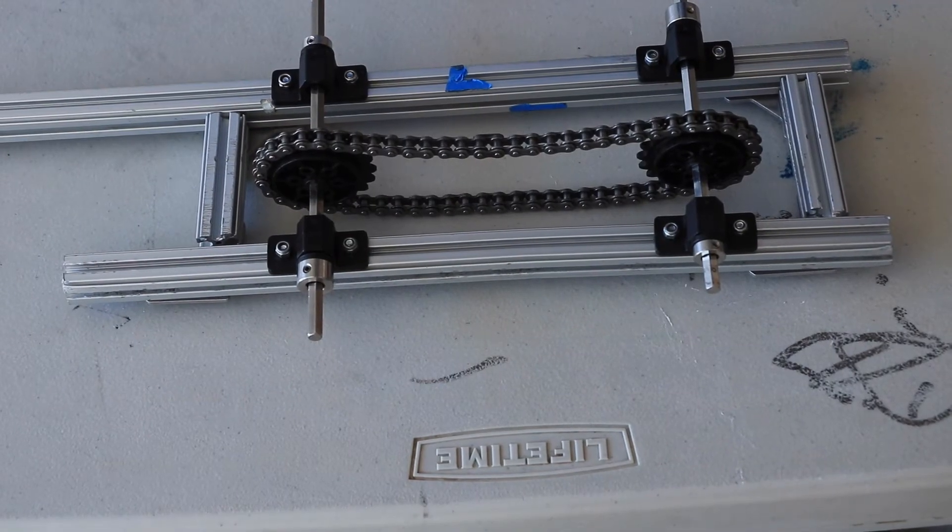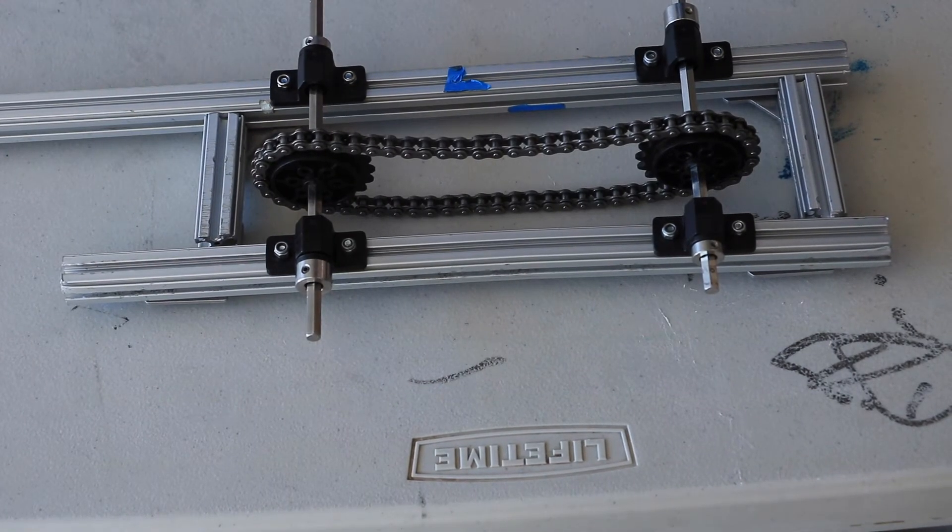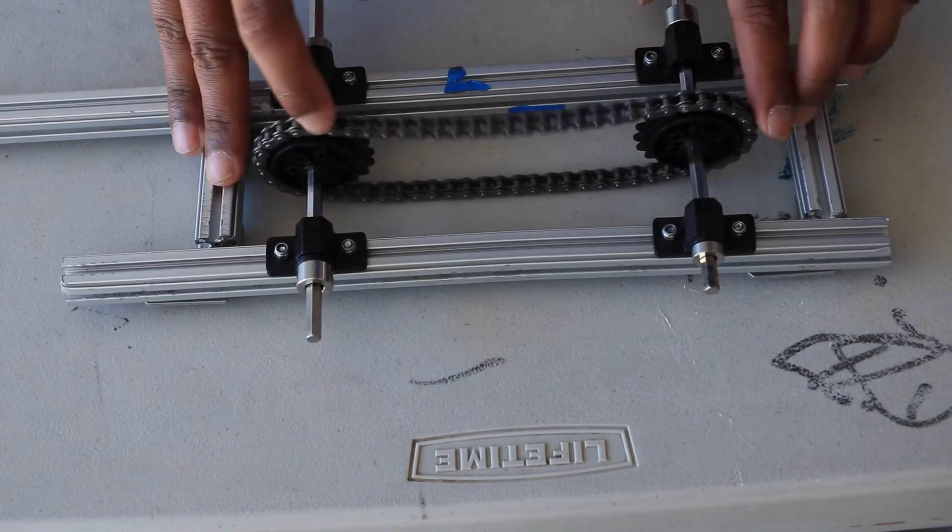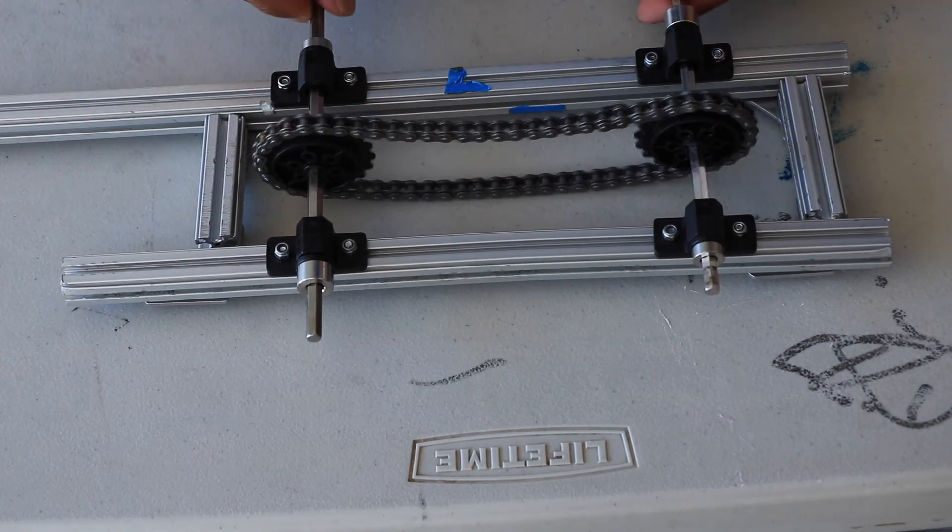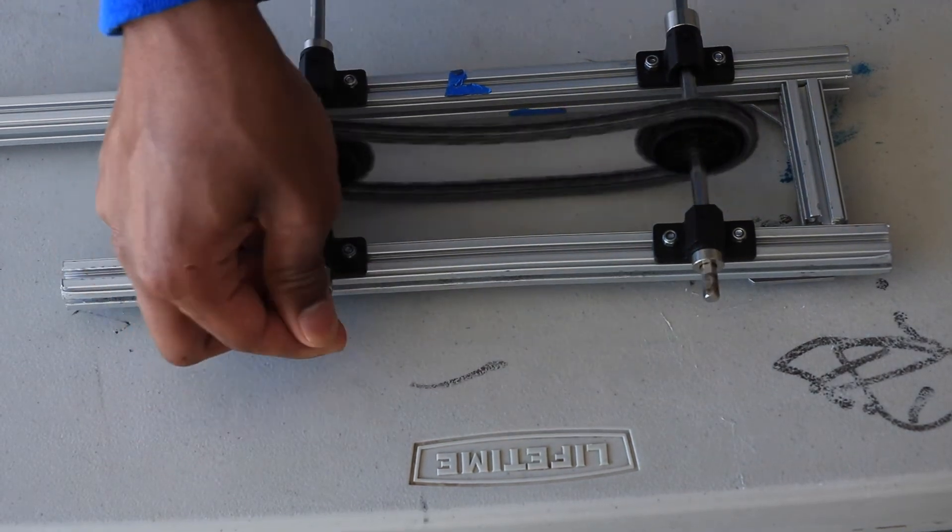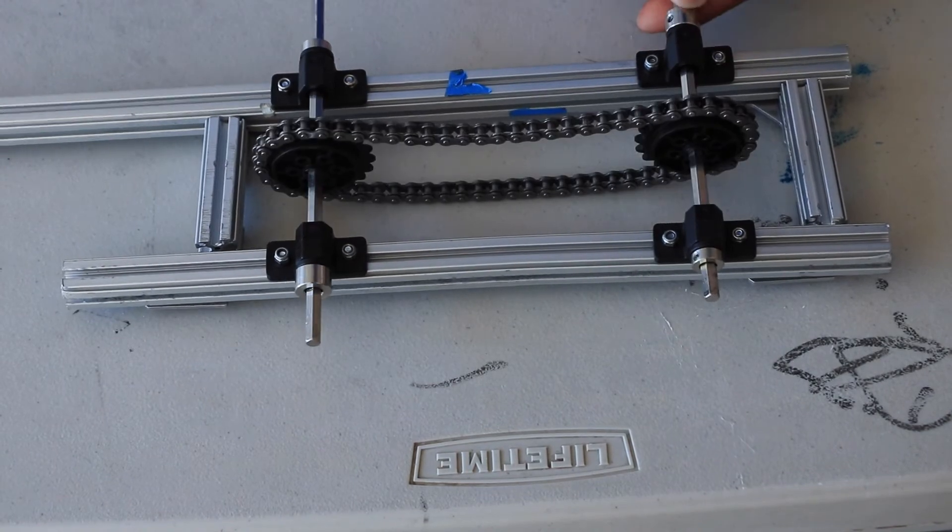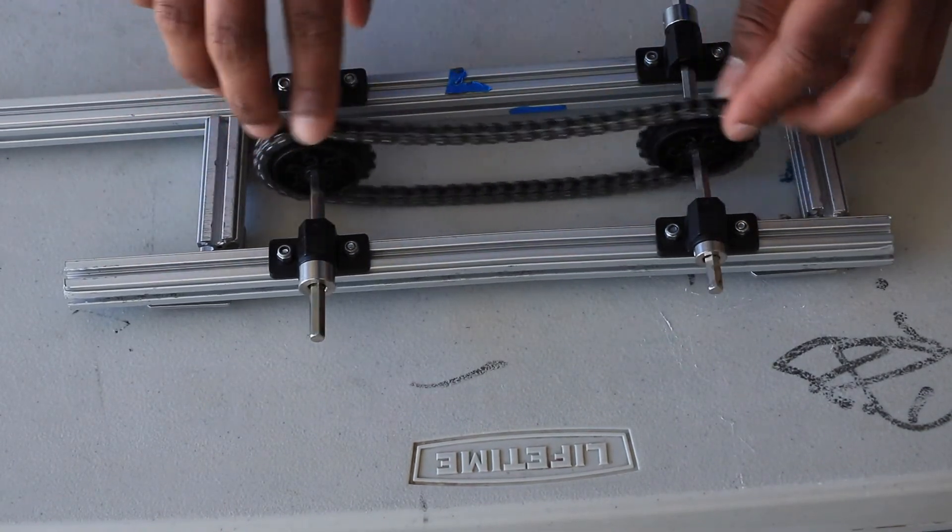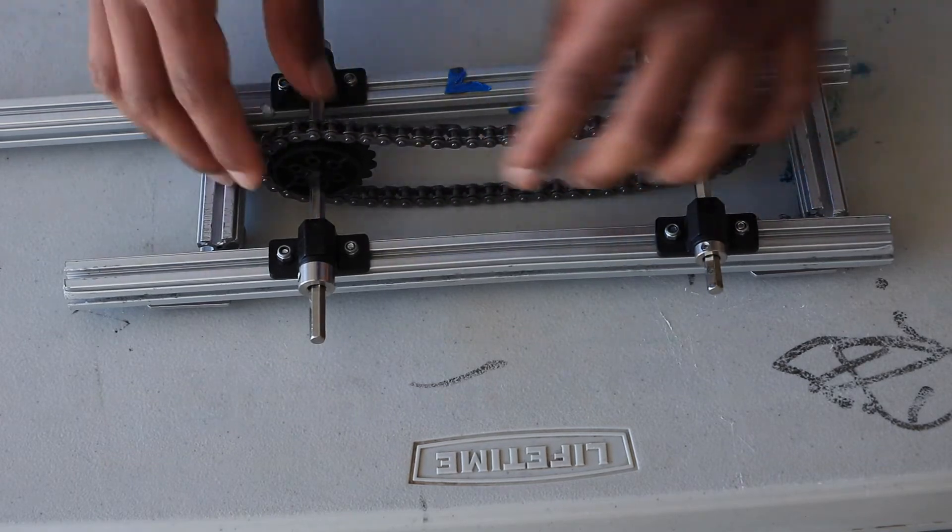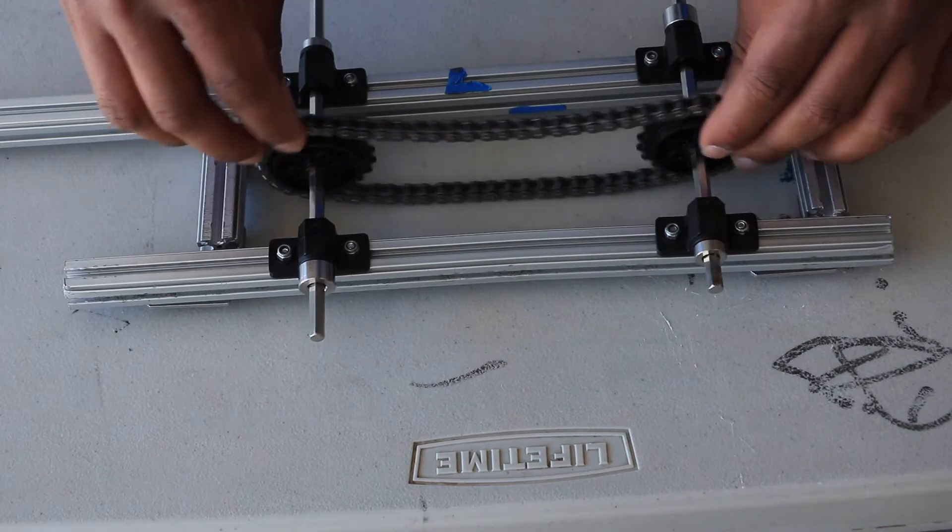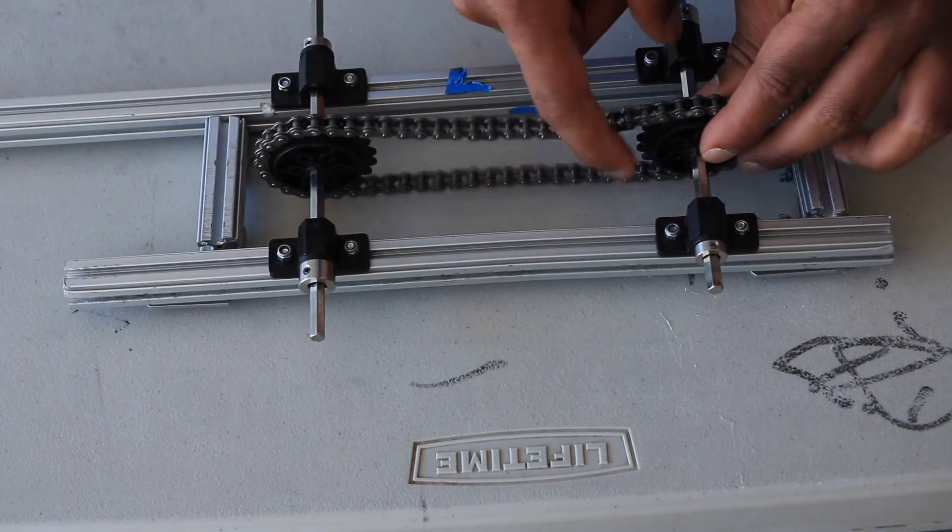The next form of motion transmission is chains and sprockets. Chains and sprockets are similar to gears, but in this case the axles can rotate in the same direction. Let's say this axle is being driven by a motor and this axle has a wheel. We have one sprocket on each of the axles and there's a chain connecting them.